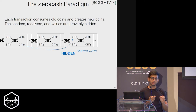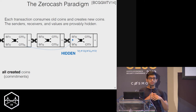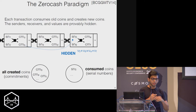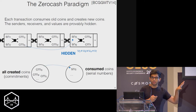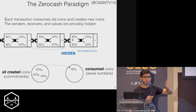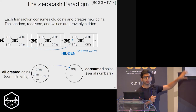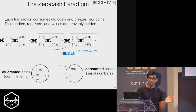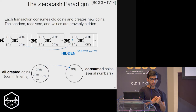More formally, the anonymity set for a transaction is the set of all possible coins in the past — the serial number can correspond to any of the coin commitments that have appeared on the ledger before. This is the best possible anonymity set you could hope for, making zero cash a good target to build upon.